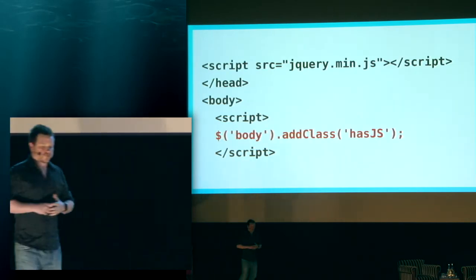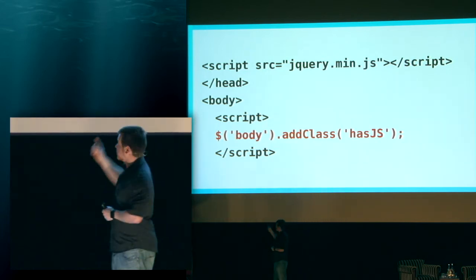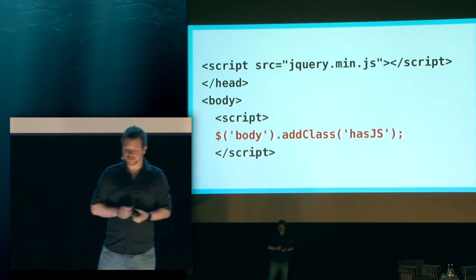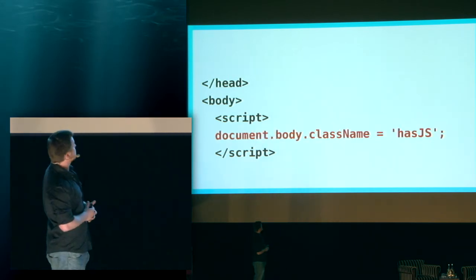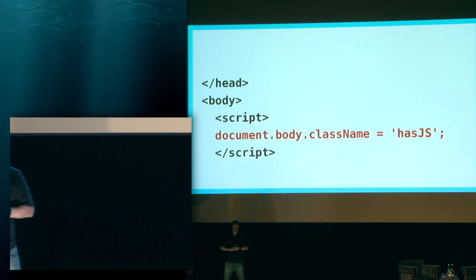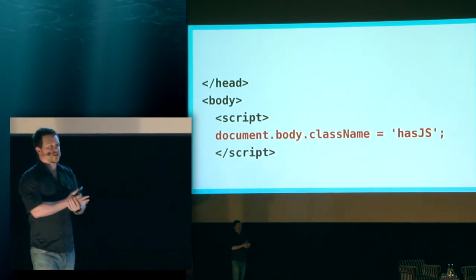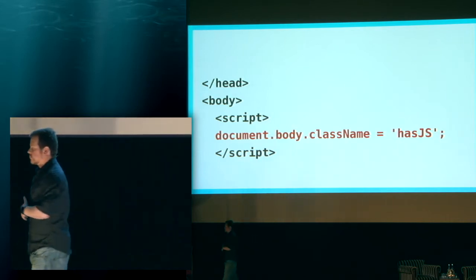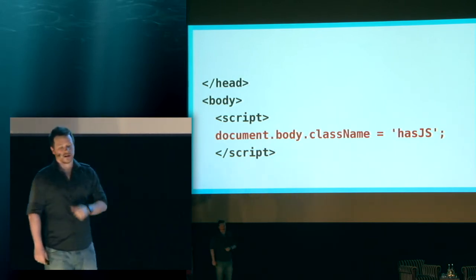I've seen code that pulls in an entire JavaScript library just to add a 'has-js' class to the body to detect JavaScript support. This could just as easily be done with document.body.className equals 'has-js'. Just add the class to your body element - you don't need the full JavaScript library. You can just have this one line, and it gives you the same class in less code with no blocking. If you already have a class on your body tag, you just append it with plus-equals.